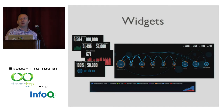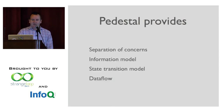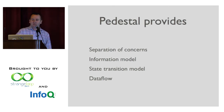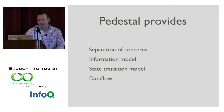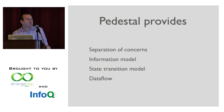We need to be able to control the widgets — to determine when things should be displayed. That's what Pedestal helps us do. Pedestal, at least in the context of this project, provides at least four things: a clear separation of concerns, an information model, a state transition model, and data flow.